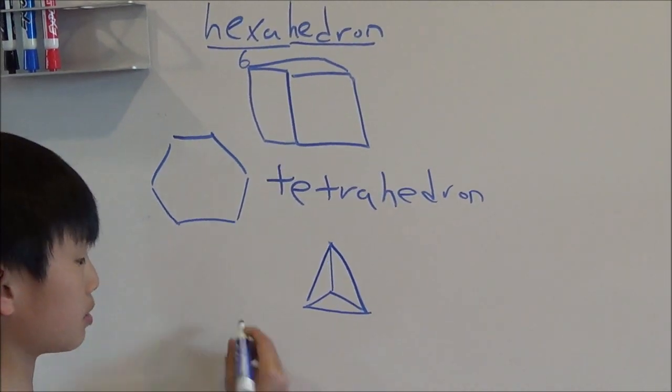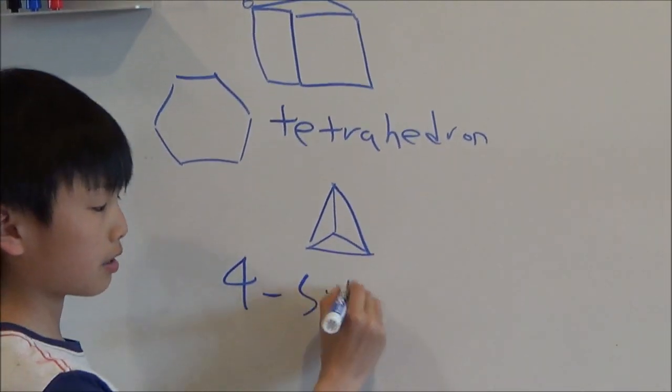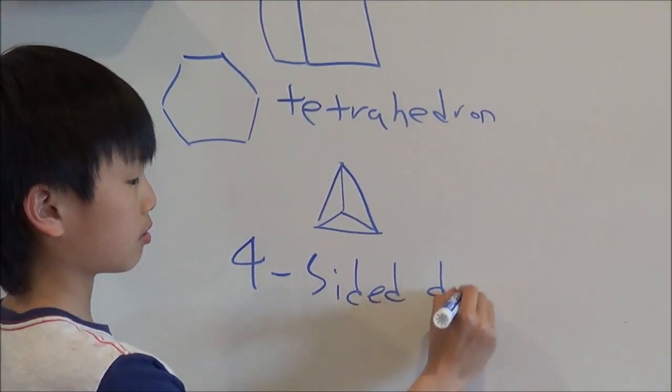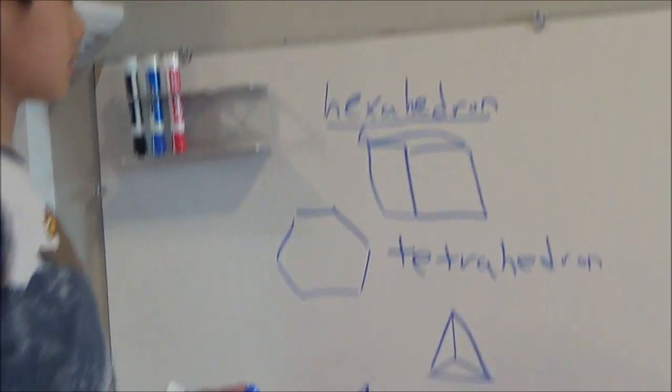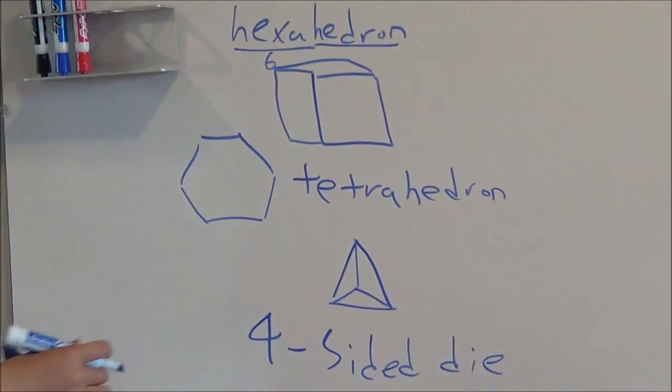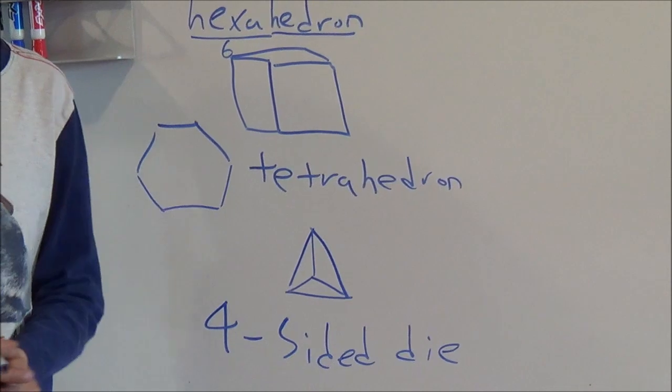This can also be used as a four-sided die. Now, you may recognize these two shapes as platonic solids, and later in the video I'll be explaining why there are only five of them.